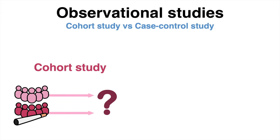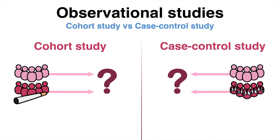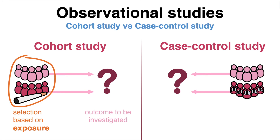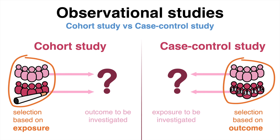Both cohort studies and case-controlled studies belong to the observational studies, meaning that researchers only observe but don't intervene. As both studies are frequently mixed up, it helps to point out the difference. The major difference lies within the sample selection: in cohort studies, the allocation into groups is based on the risk factor or exposure. In contrast, the groups in case-controlled studies are defined based on the outcome or disease.